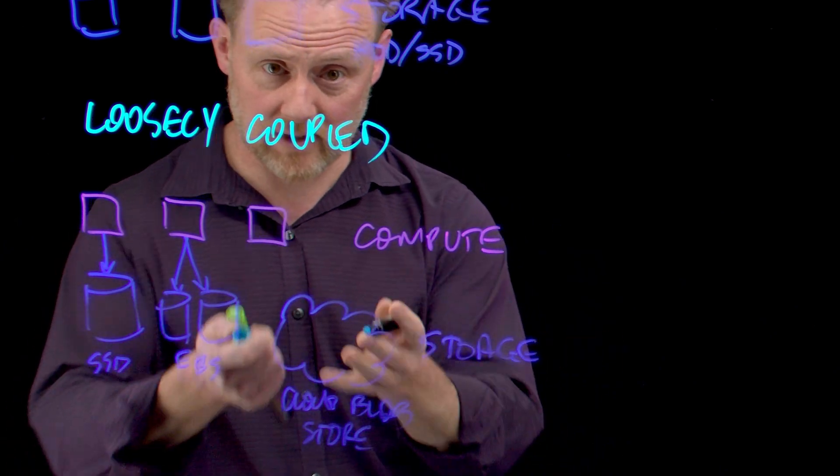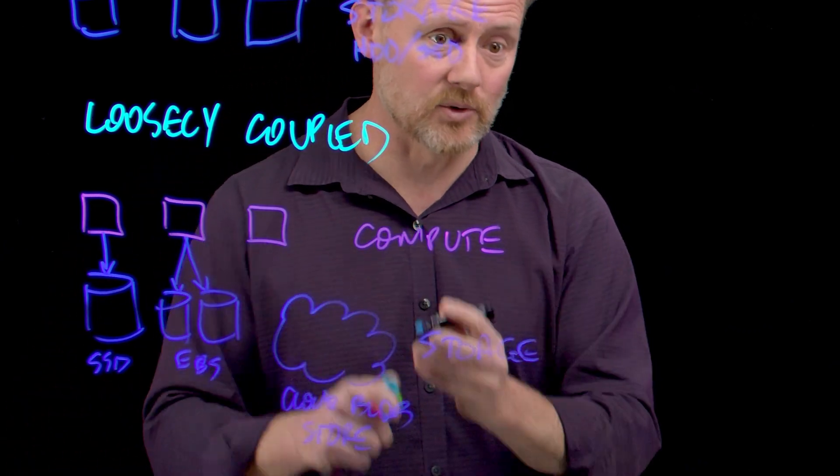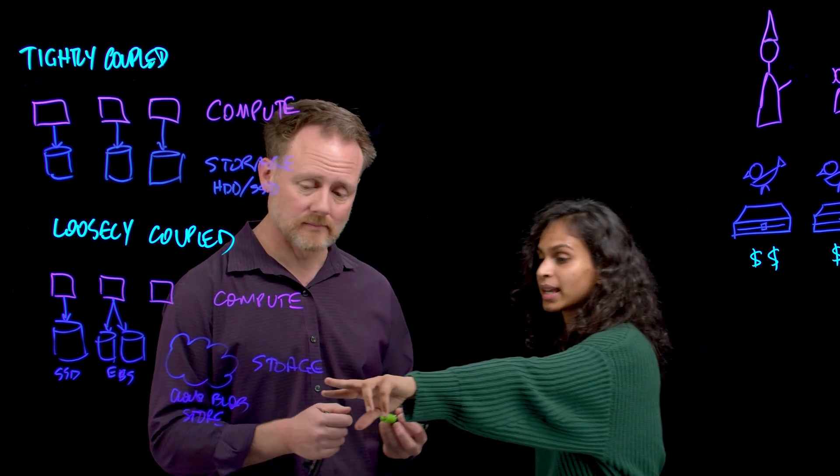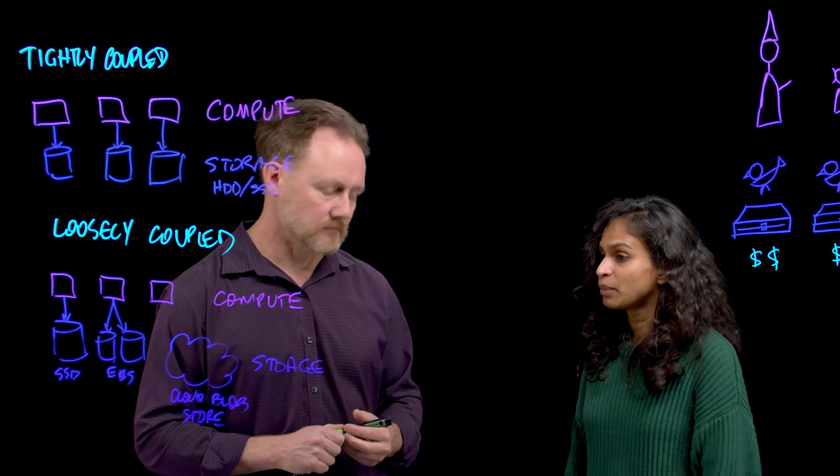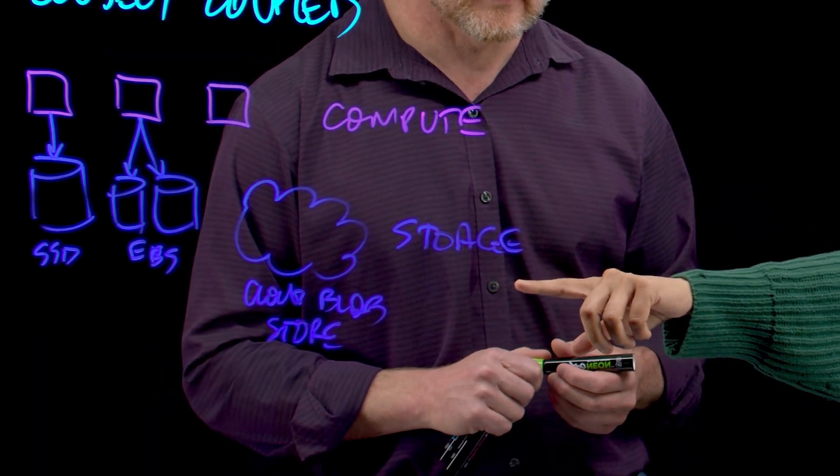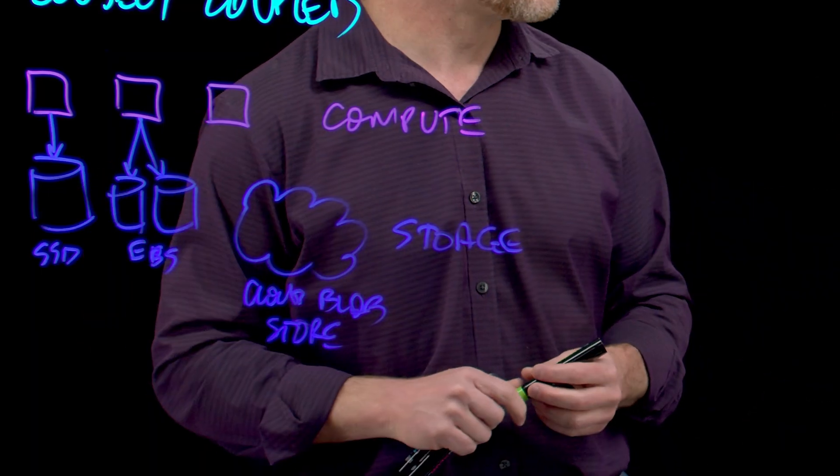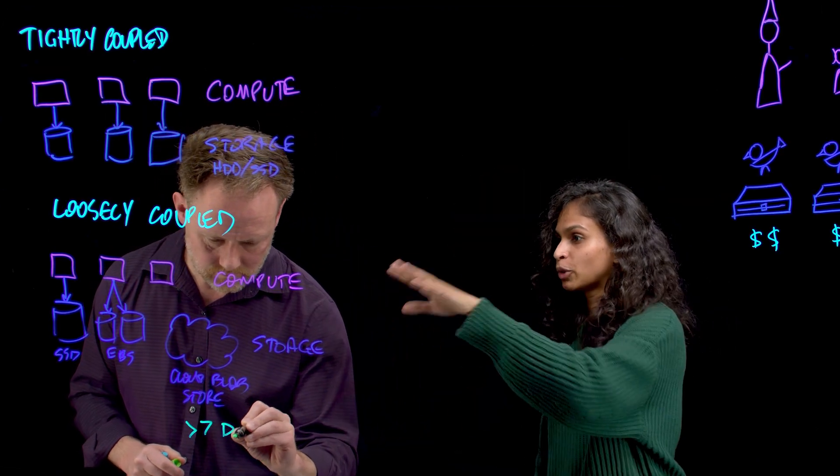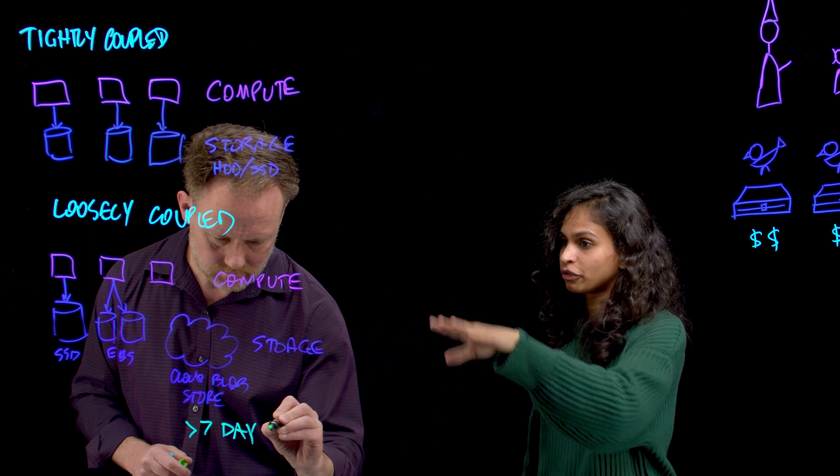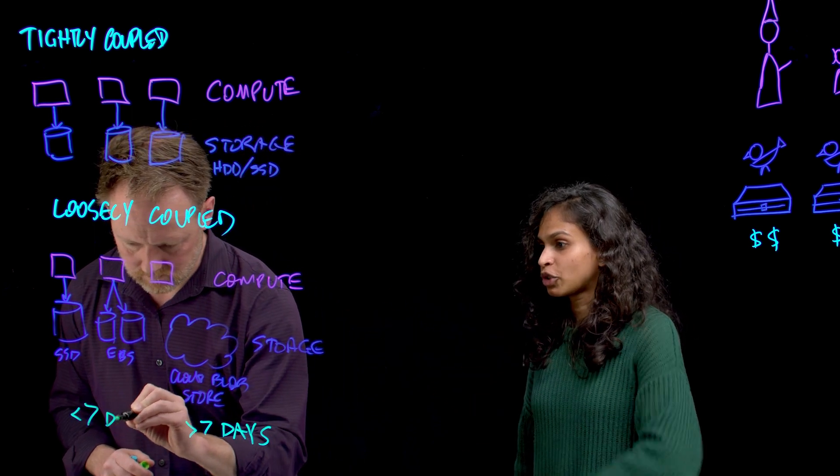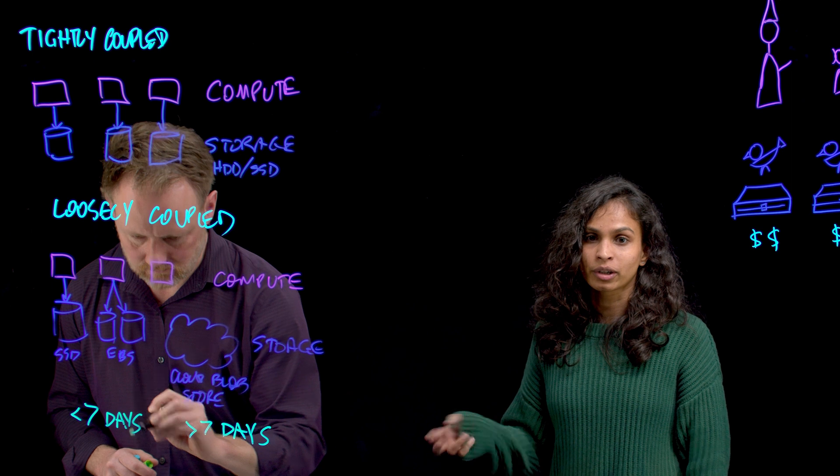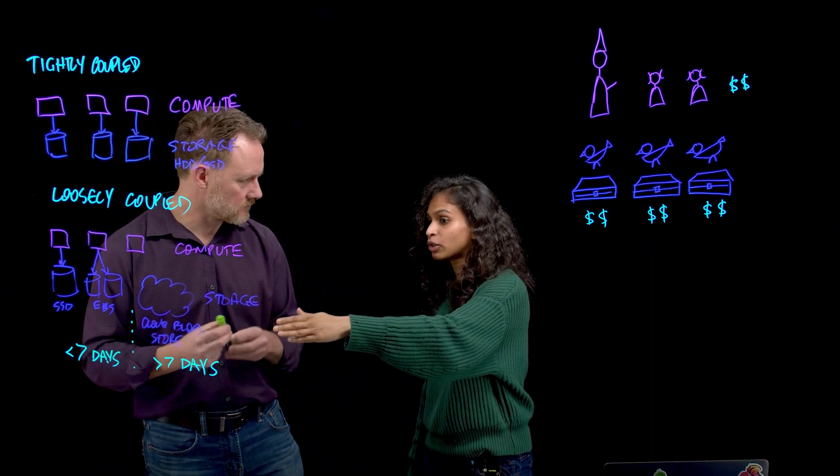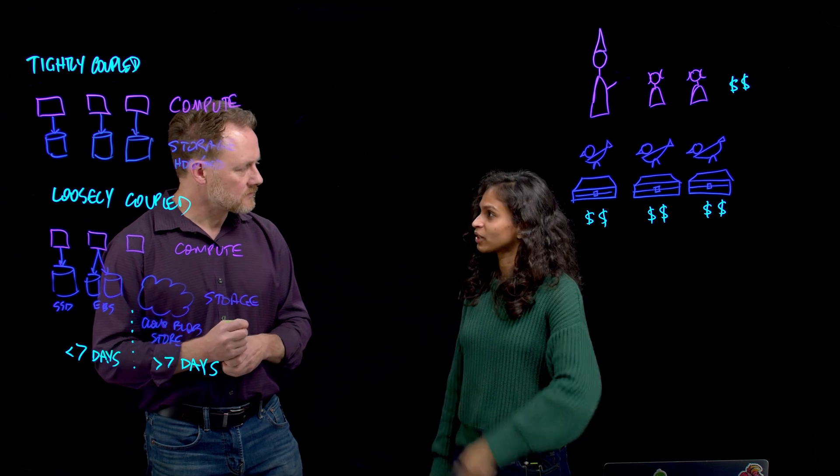Some of that data can go there, the historical data. And if you remember from the table in the other video, this helps us bring our storage costs drastically down. Because this costs almost one-fifth or even lesser than the locally attached storage. And the best part is, this is completely configurable. You can still operate Pinot in fully tightly coupled mode, or in fully decoupled mode, or even go for a hybrid approach. Based on what your definition of recent data is, some of it stays in the local storage. Everything else moves to the cloud object storage.